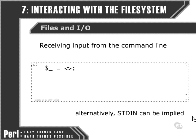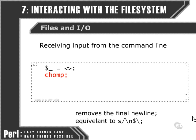In this case, standard input. The chomp function, as we saw in an earlier movie in this chapter, removes the final new line. It's equivalent to doing a replace function that will remove the final new line on the string.